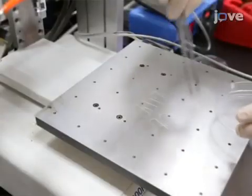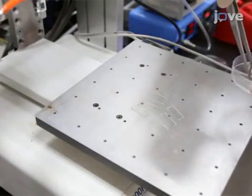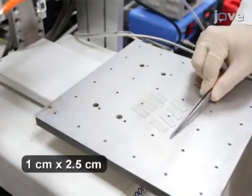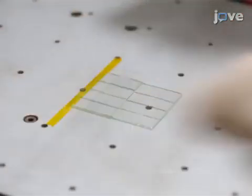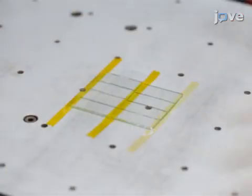Then, on the heated airbrushing stage, arrange 8 glass rectangles to cover a 4 by 5 centimeter area. Use heat-resistant tape to fix the slides in place.